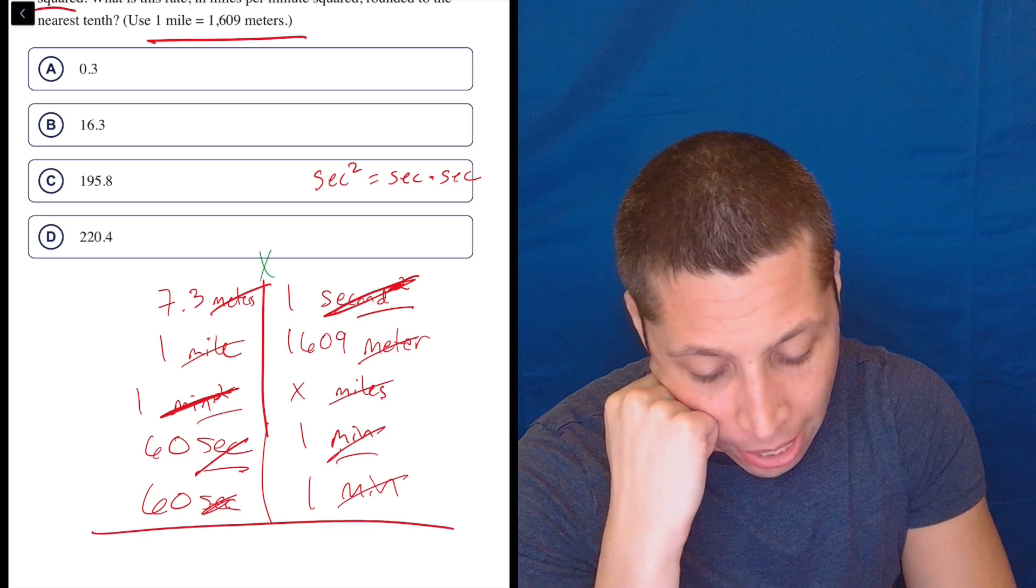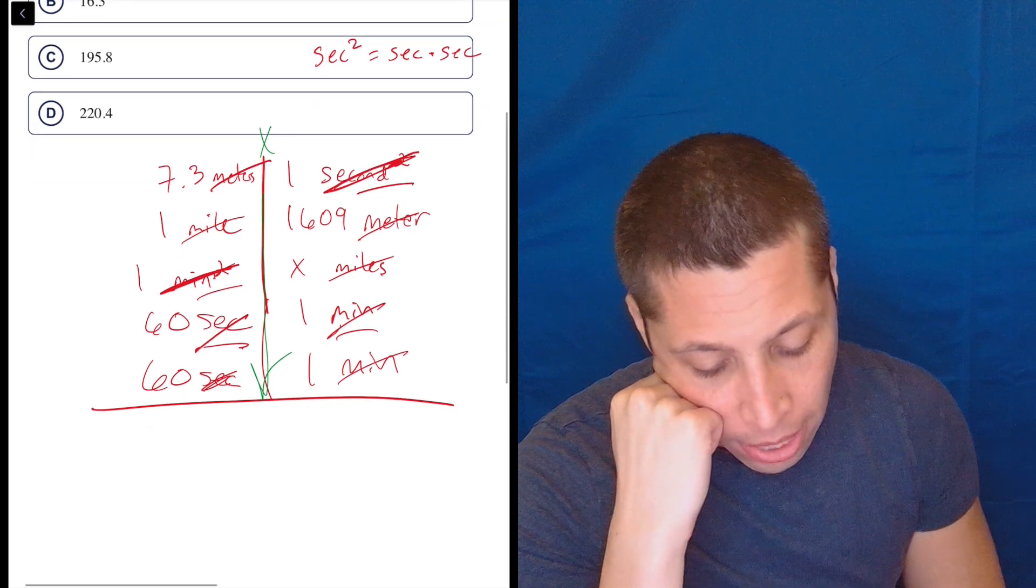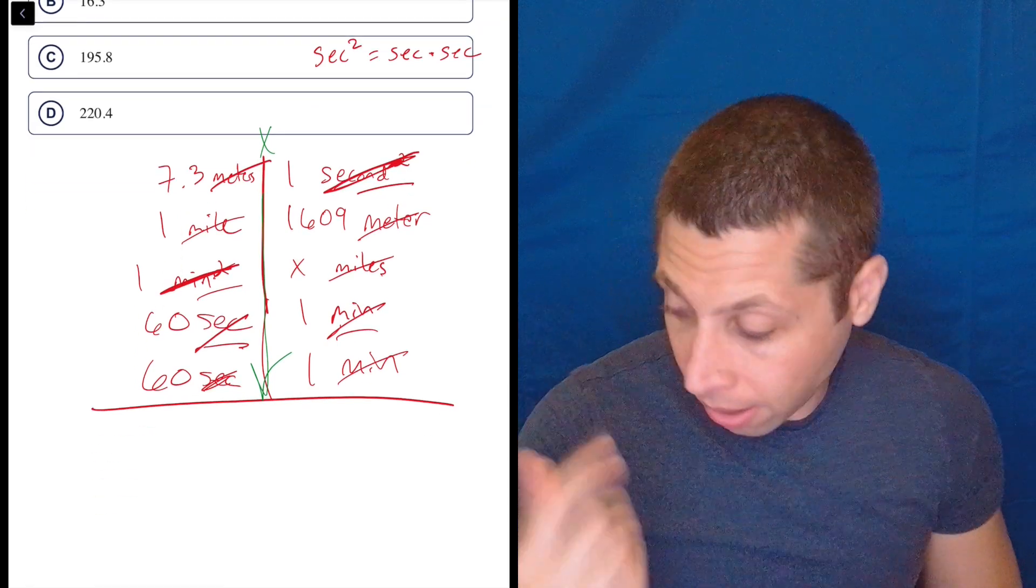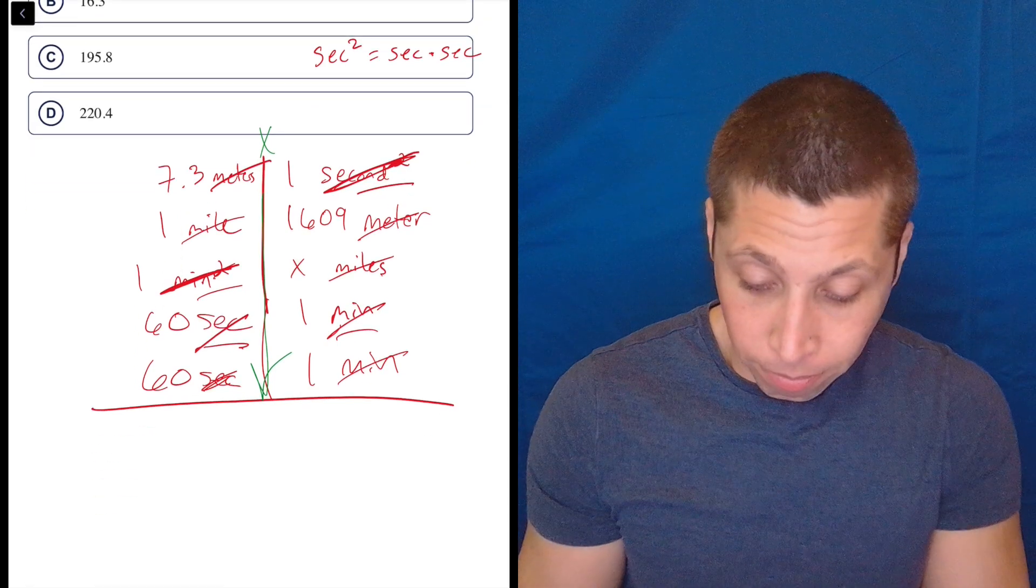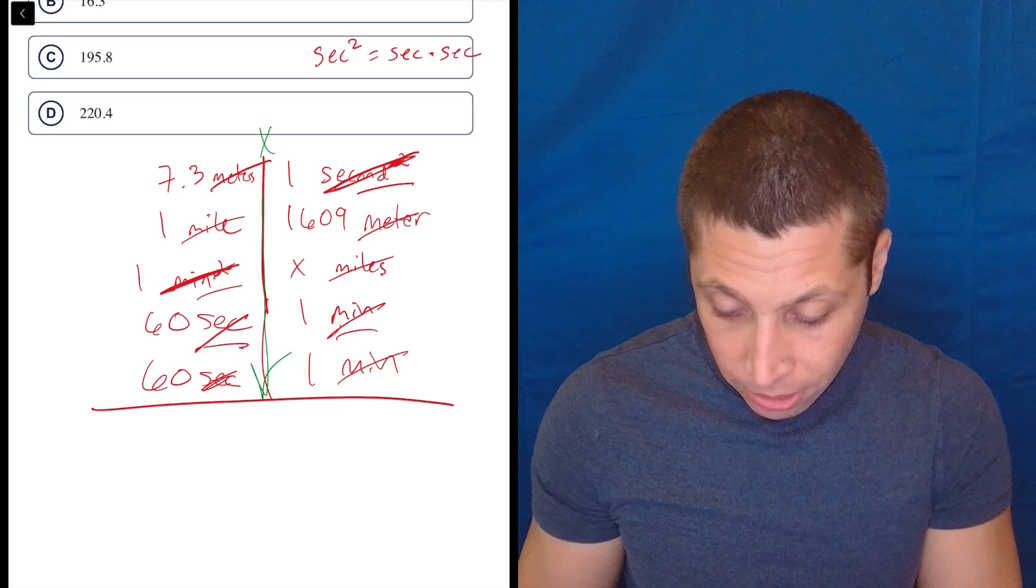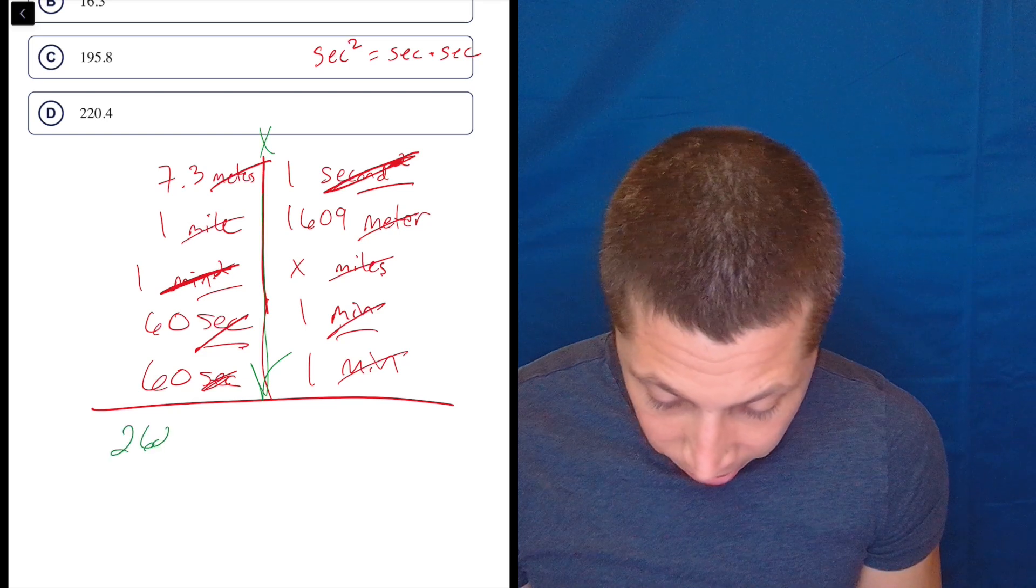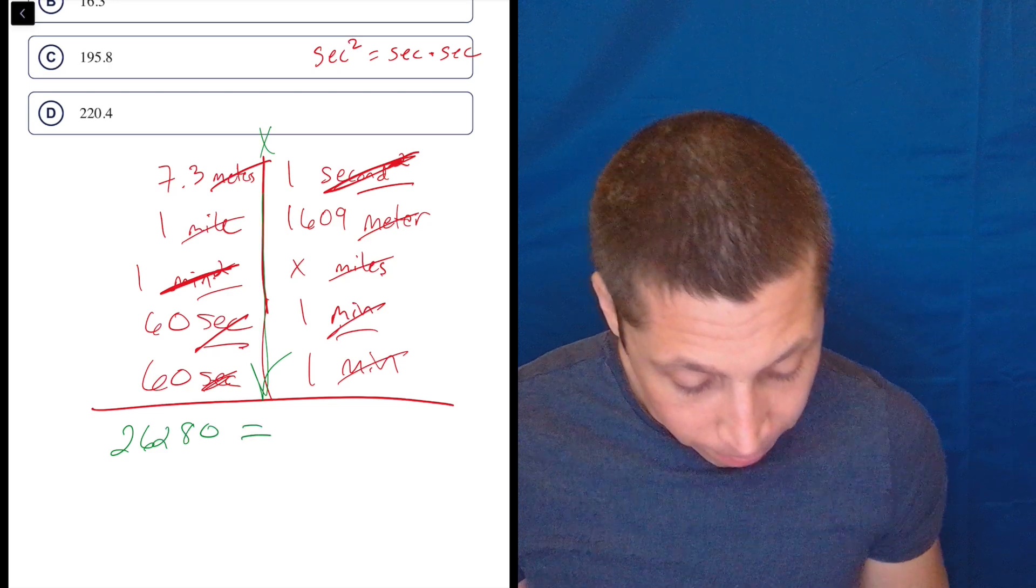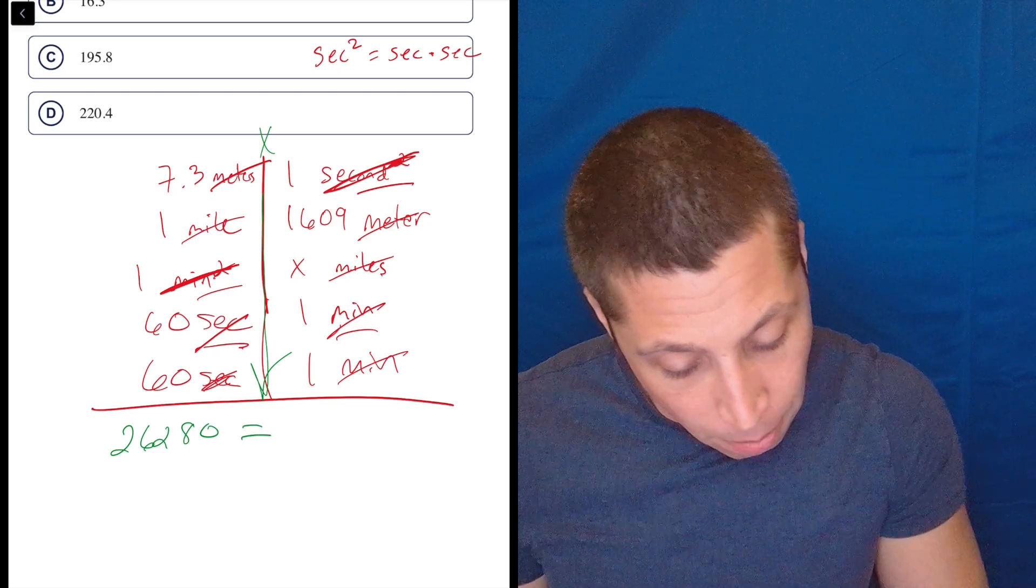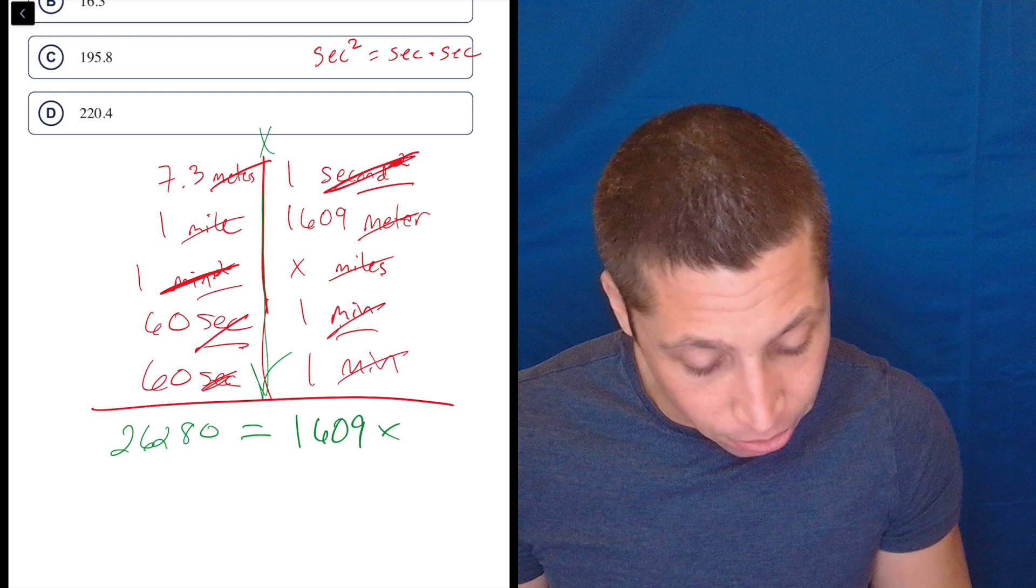I just need to multiply down the columns and create an equation. So on the left side, I would just get my normal calculator here. 7.3 times 60 times 60 is 26,280. And I'm going to throw an equals in there. And then multiplying on the right side, I just get 1609 X, right?